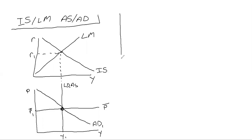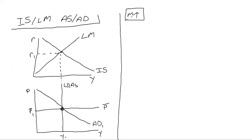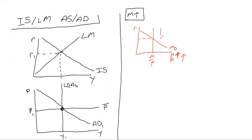Our first example will be what happens if the nominal money supply increases — so M increases. Let's talk about what happens in the short run. We know that the money supply increase happens in the money market. If our nominal money supply increases, our real money supply will increase, shifting M/P to the right. This lowers the real interest rate.